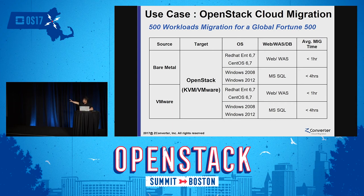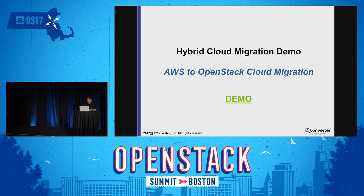The operating systems and application workloads were as follows: on-premises operating systems were Red Hat and Windows Server 2008/2012, and workloads included web, WAS, and databases. I'm going to show you a demo using our gcloud.net SaaS website. This demo migrates an AWS Windows Server to an OpenStack cloud instance.